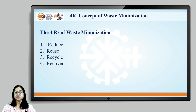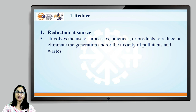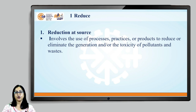Step one is reduce, which means reduction at source. To achieve this, you need to use processes or practices which will either eliminate waste generation entirely — meaning no waste is generated — or result in reduction in the toxicity of pollutants and hence the toxicity of waste. This is the true meaning of reduction at source: either quantity or toxicity of waste is reduced.